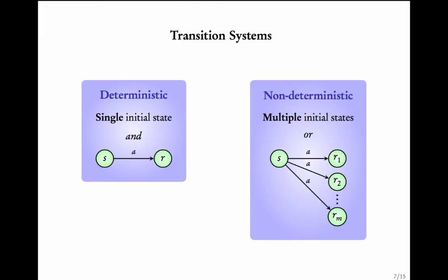In the last lecture we saw what transition systems were. Now in this module we want to classify transition systems into two kinds. In a deterministic transition system, there is a single initial state and for every state on an action there is a single transition. In a non-deterministic transition system, you could have multiple initial states or states with multiple transitions on an action.